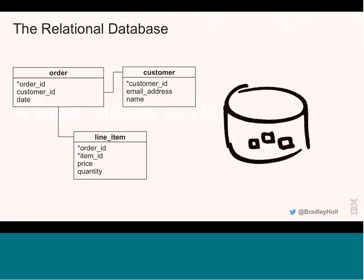I'm sure everyone here is very familiar with the relational database model. The big idea is that you have tables with columns and rows, and tables have primary keys and foreign keys. You can see here on the slide, for example, there's an order table, a customer table, and a line item table. The order table has an order ID primary key and a customer ID, which is a foreign key that references the customer ID field over in the customer table.